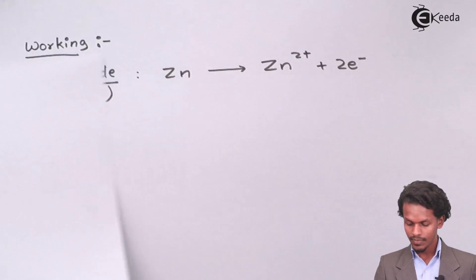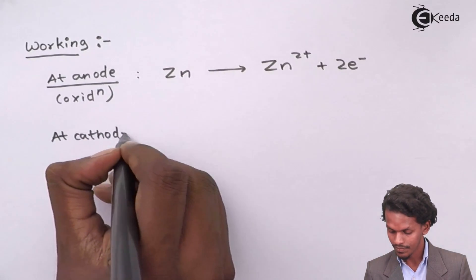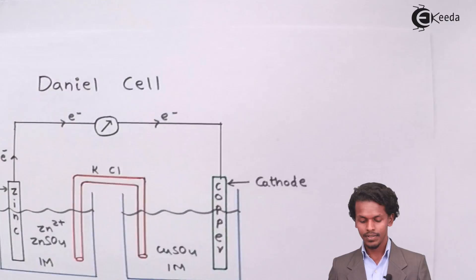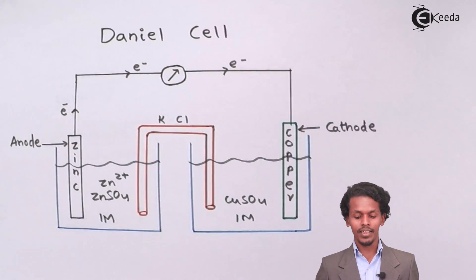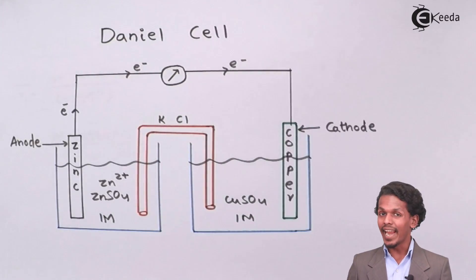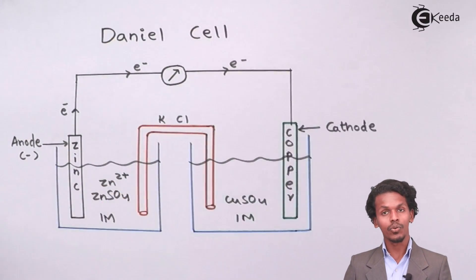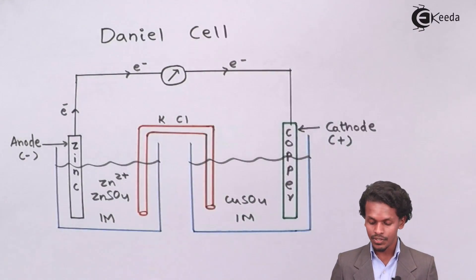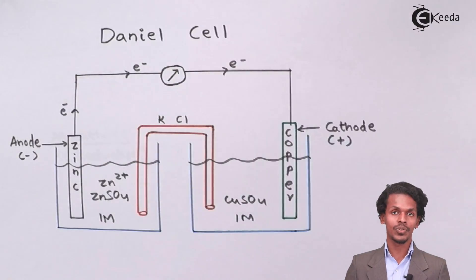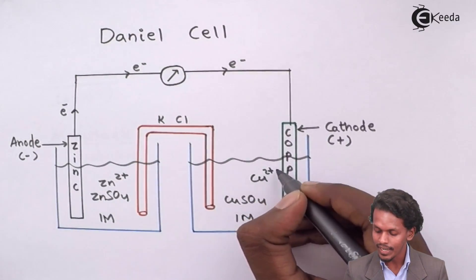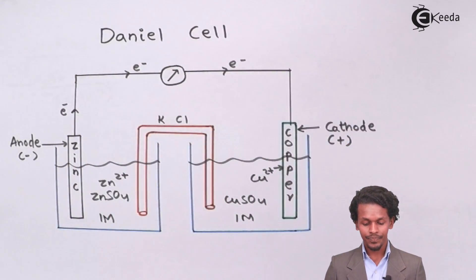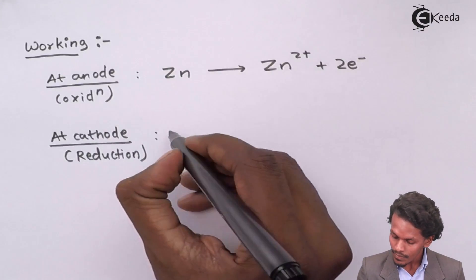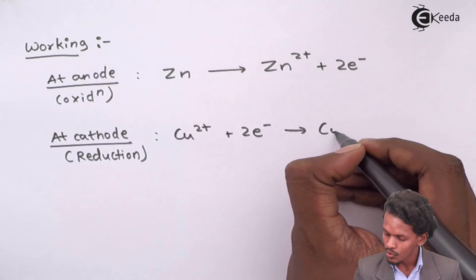At the cathode, reduction occurs. The anode, which releases electrons, acts as the negative terminal, while the cathode acts as the positive terminal. The Cu²⁺ ions present in the CuSO₄ solution accept the two electrons brought from the anode and get deposited on the copper electrode. So: Cu²⁺ + 2e⁻ → Cu (solid).